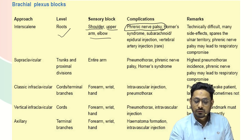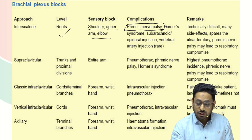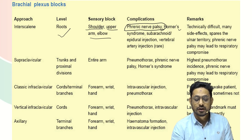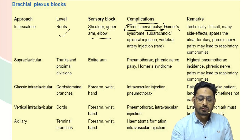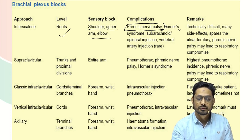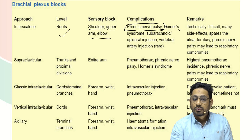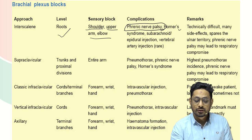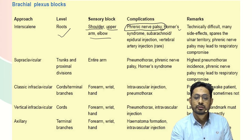Interscalene block causes phrenic nerve palsy, and other complications include Horner syndrome. An inadvertent epidural injection can occur due to interscalene block, and a serious complication is vertebral artery injection. The vertebral artery lies at the level of the root, so when giving interscalene block we may sometimes pierce the vertebral artery, causing vertebral artery injection, which is a serious complication. But we should always remember phrenic nerve palsy — this is a very important point.